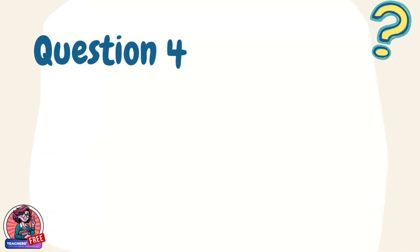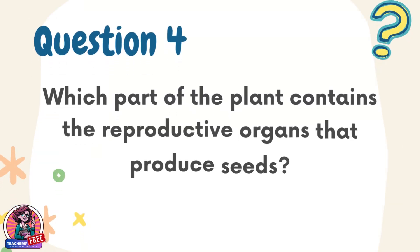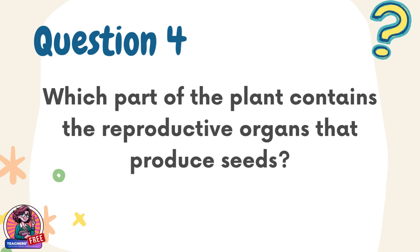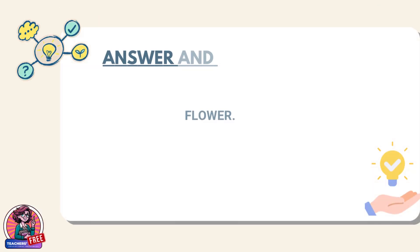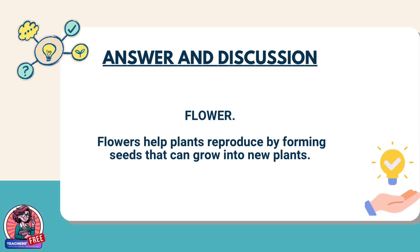Question 4. Which part of the plant contains the reproductive organs that produce seeds? Answer: Flower. Flowers help plants reproduce by forming seeds that can grow into new plants.